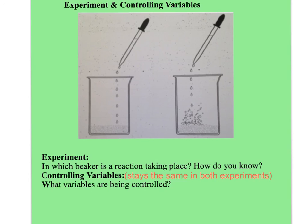Now for the controlling variables part, I need you to write this — it's in red on your screen. It says 'stays the same in both experiments.' The word controlling means it's staying the same. So what is the same in the beaker on the left, and what's the same in the experiment on the right? Tell me all the things that stayed the same. It does not need to be in complete sentences — you can just do a bulleted list. Hit pause so you can complete the controlling variables. Once you complete both questions, close your workbook and sit quietly so Mrs. Colville knows when she can continue the lesson. Thank you and good luck.